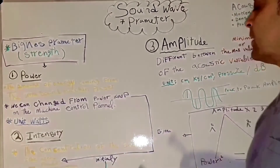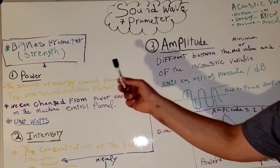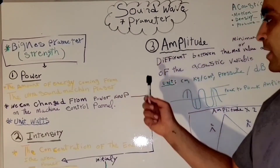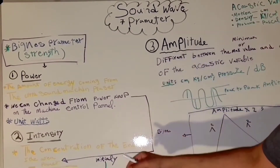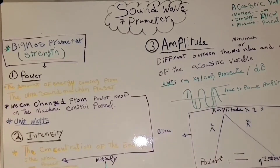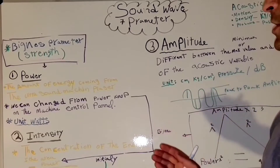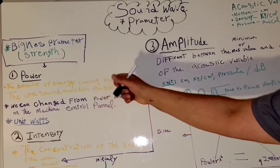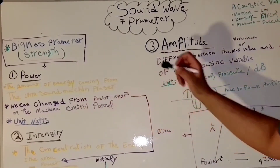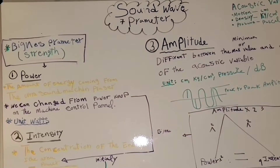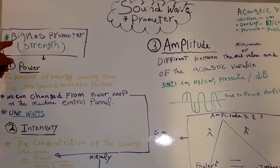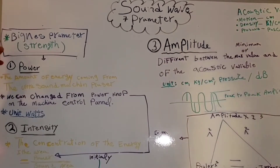I have a video about the relationship between the amplitude, the power, and the intensity, and I put it in the description below. You can watch it to understand the relationship between the bigness parameters. The bigness parameters represent the strength of the sound beam.